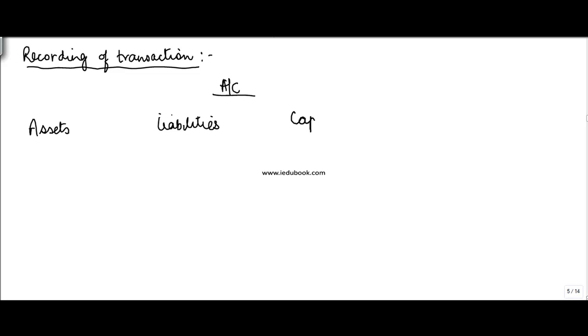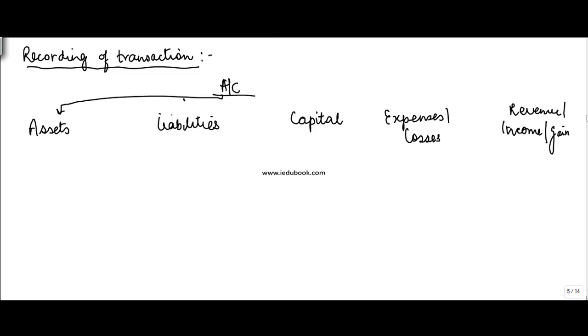These five categories are: assets, liabilities, capital, expenses, and revenue — also called income or gains. Let's understand each one of them one by one, and then I will take you through the rules of accounting for these account types. What do you mean by an asset?